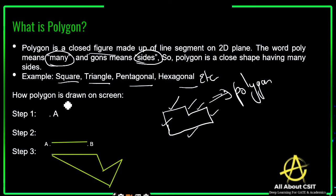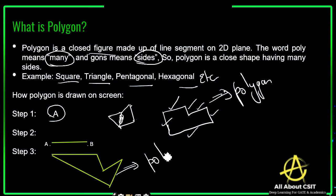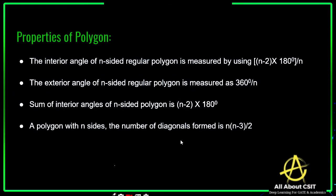So how do you draw a polygon on the screen? First you need to select a pixel. Whatever pixels are present on the screen, those pixels need to be added and it should form a closed shape. Step one: select a pixel. Step two: two pixels are joined. Step three: the final polygon shape can be drawn. These are the basic steps.